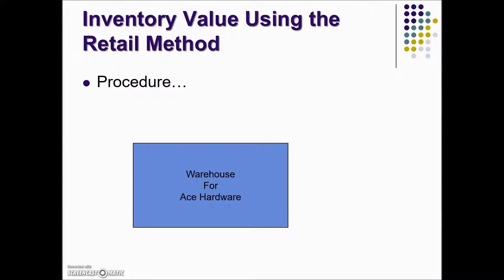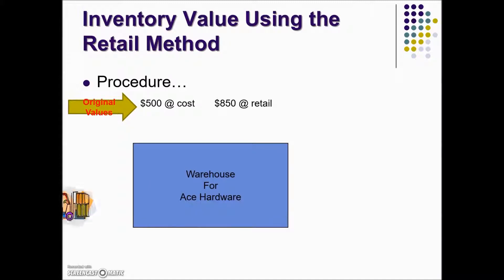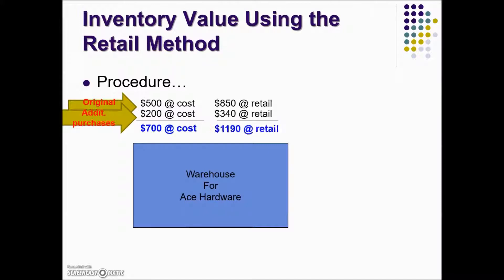Here's a low-tech graphic to represent what's happening. We have our warehouse here, and currently in the inventory we have $500 at cost. Those items are priced with a selling price retail value of $850. More goods are brought in; the cost is $200 and they're priced at $340 at retail price. We have a total of $700 at cost, and those goods with price tags have a value of $1,190.